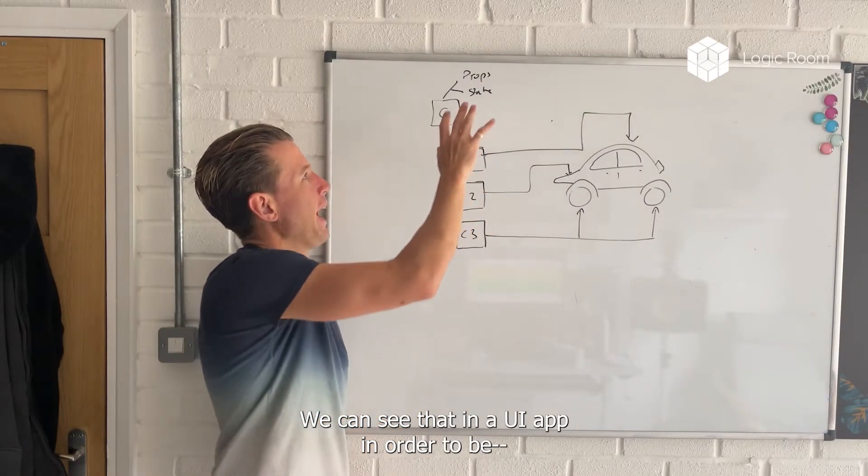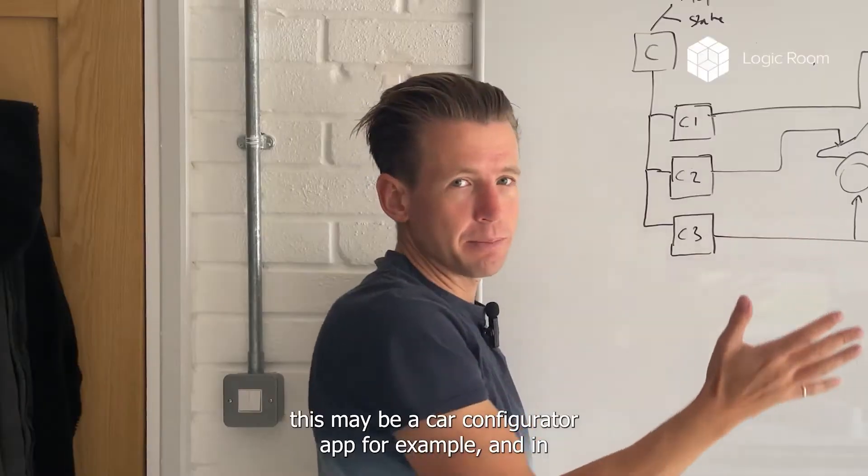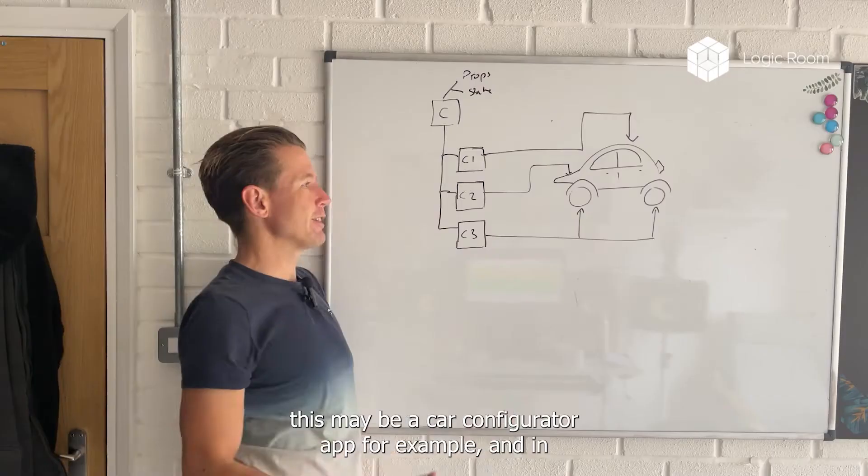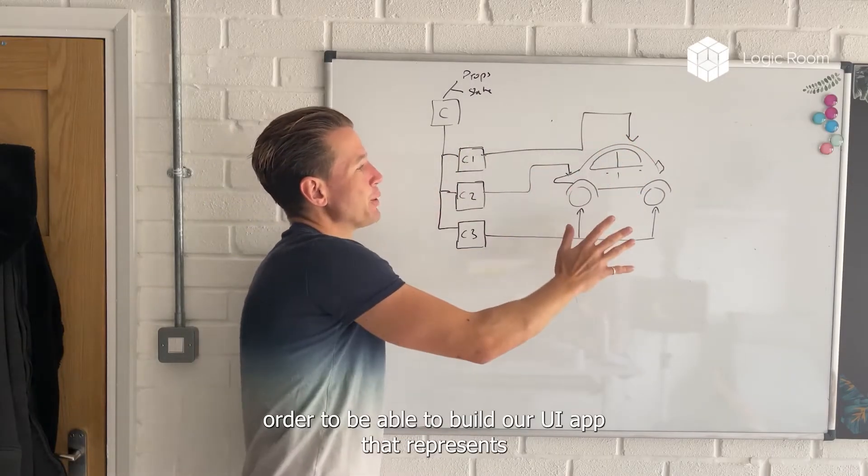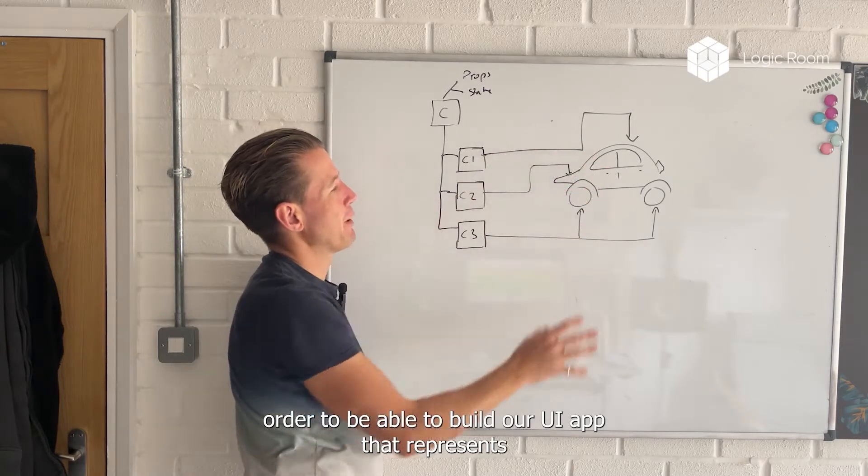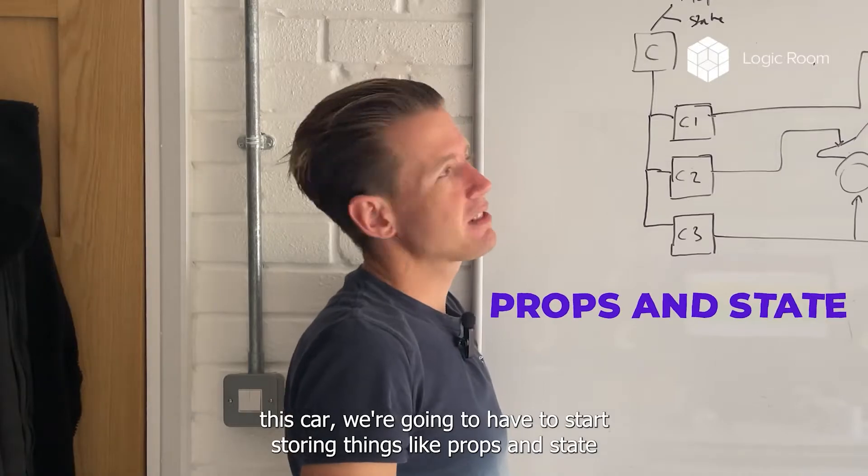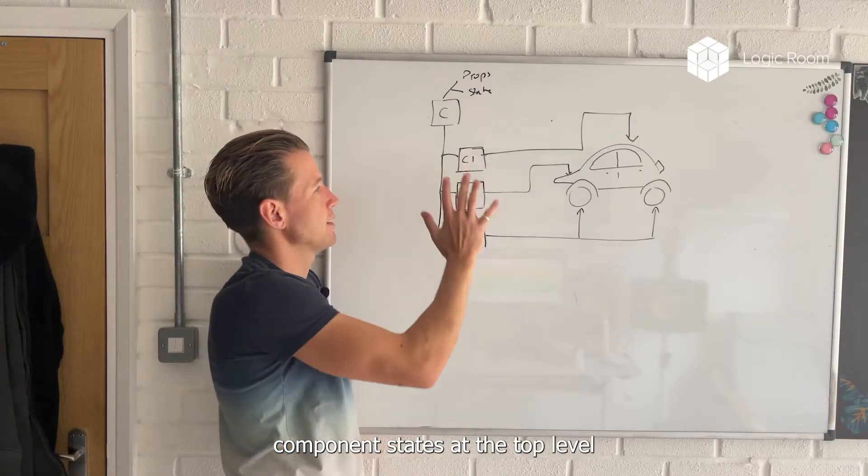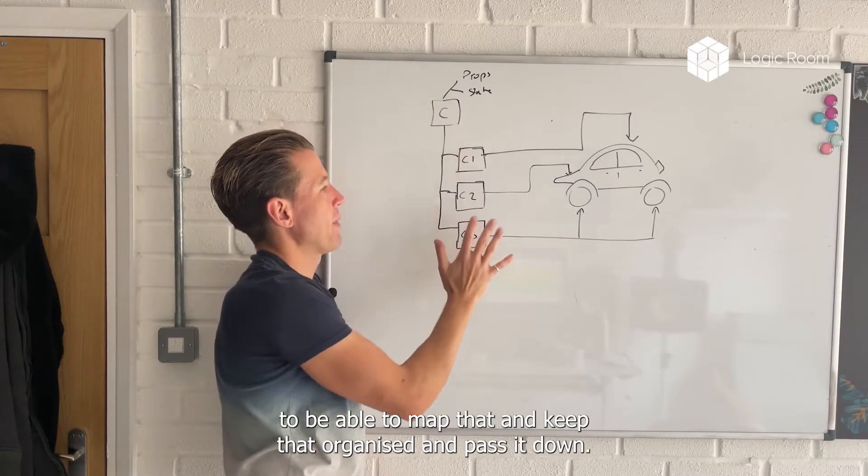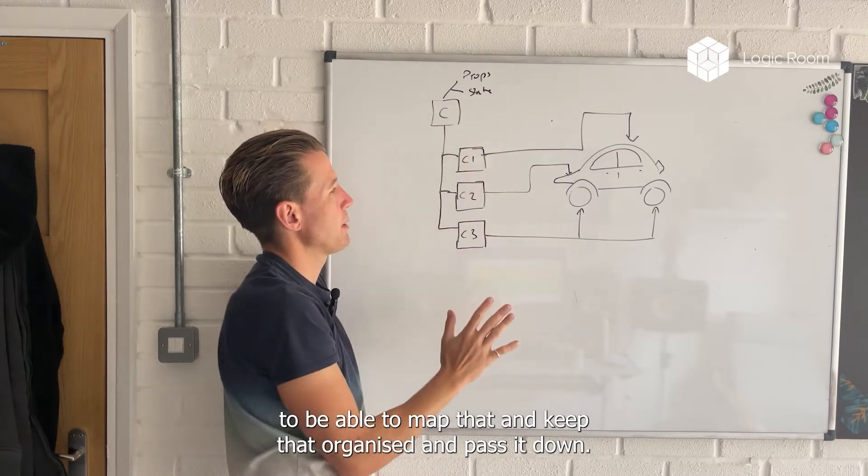And we can see that in a UI app, this may be a car configurator app, for example. In order to be able to build our UI app that represents this car, we're going to have to start storing things like props and state, component state at the top level, to be able to map that and keep that organized and pass it down.